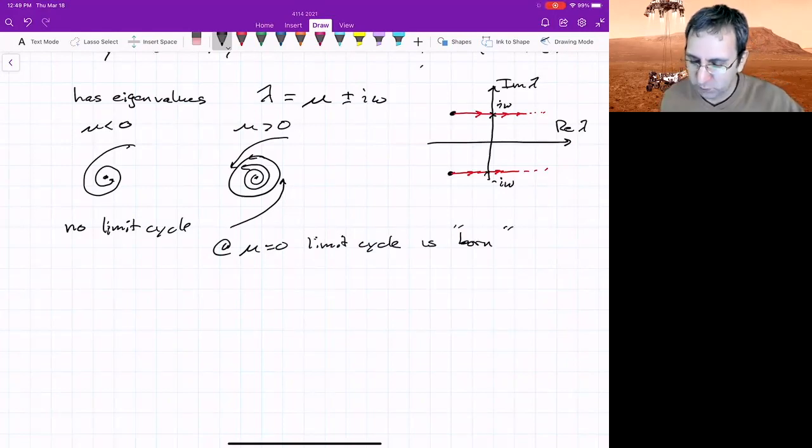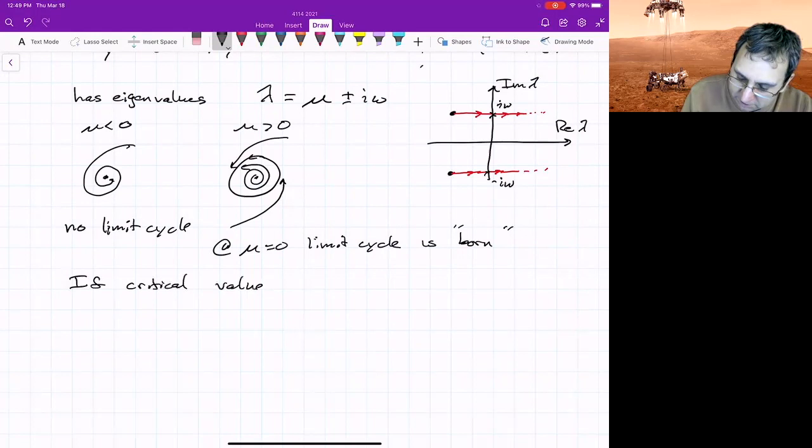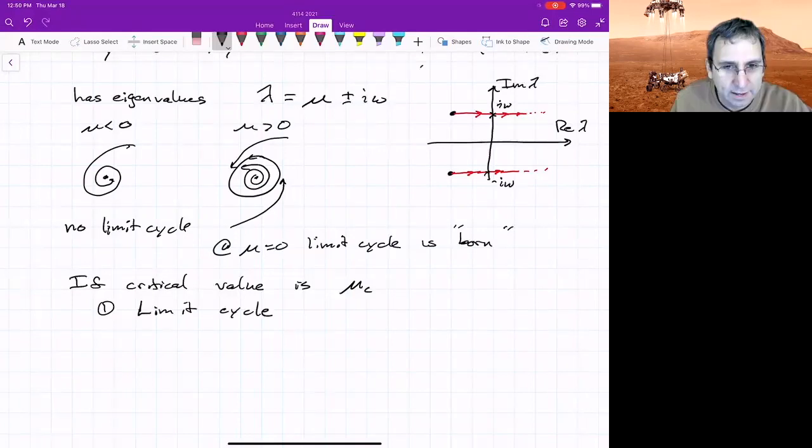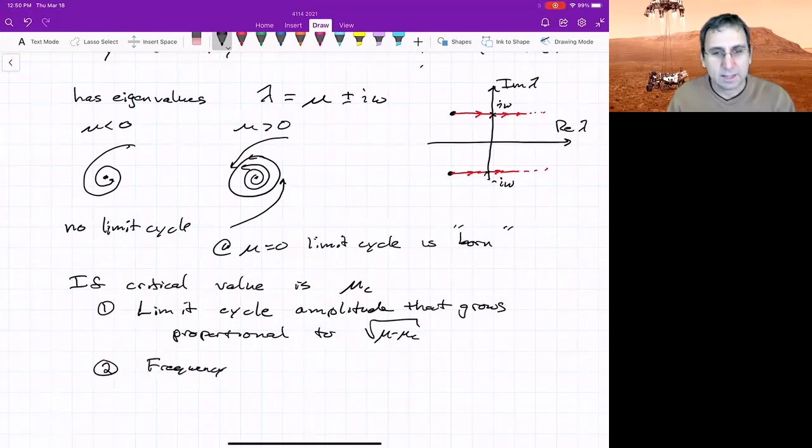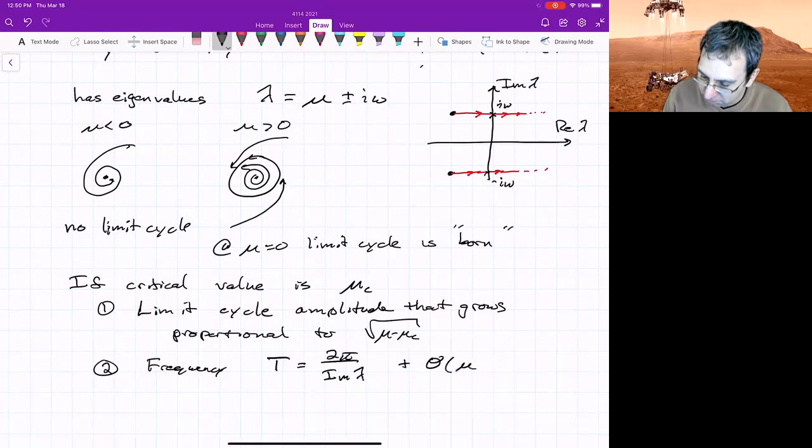There's a general rule of thumb. We've set this up so that the critical value is mu equals zero, but if the critical bifurcation value is something non-zero, let's call it mu critical, then we would have that there's a stable limit cycle. It has an amplitude or size that grows proportional to square root mu minus mu c. And the frequency is very close to the frequency for very small mu. So it's basically t equals 2 pi over, and we could just say the imaginary part of lambda, basically evaluated at zero, plus terms of order mu minus mu c.